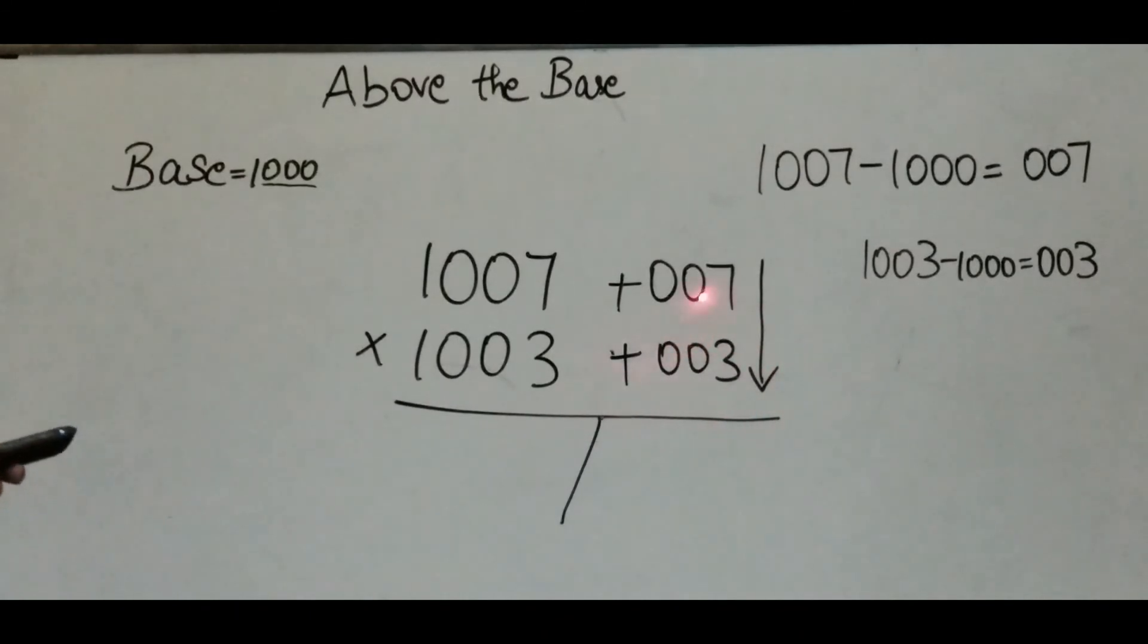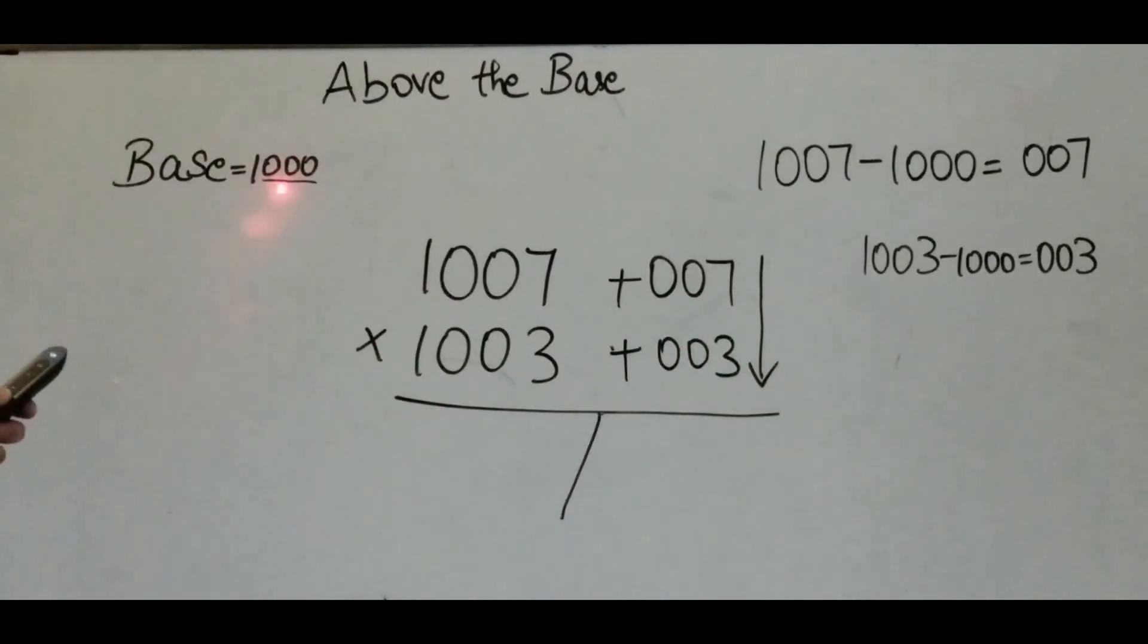First, multiply 7 times 3 which is 21. Since there are 3 zeros in 1000, there are supposed to be 3 digits now. So just put a 0 in front of 21.